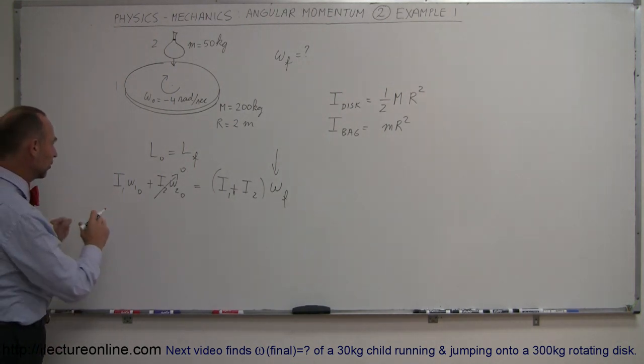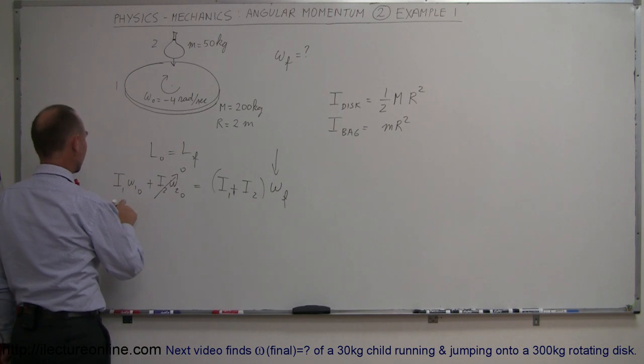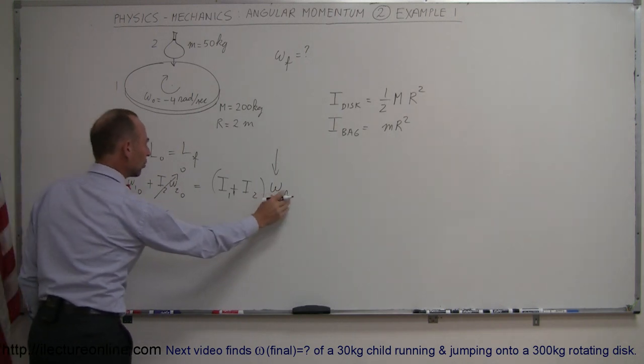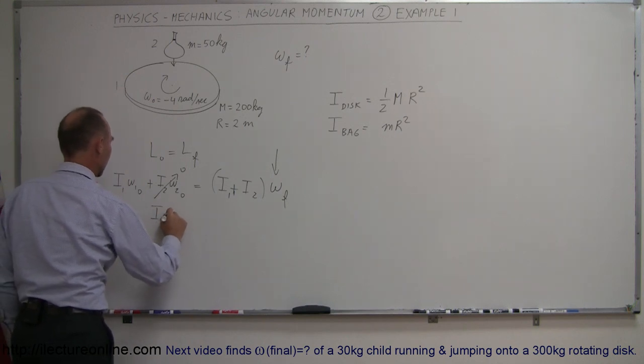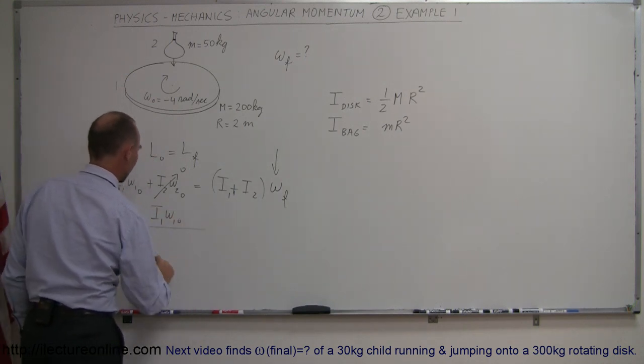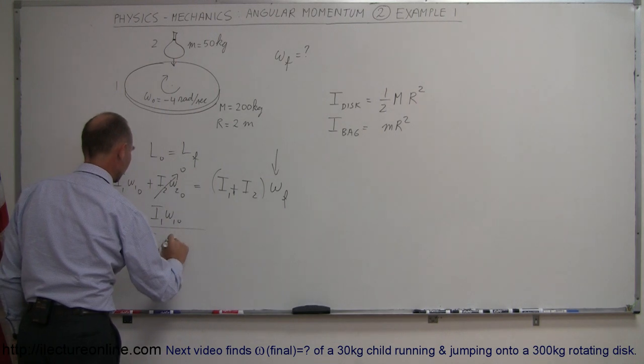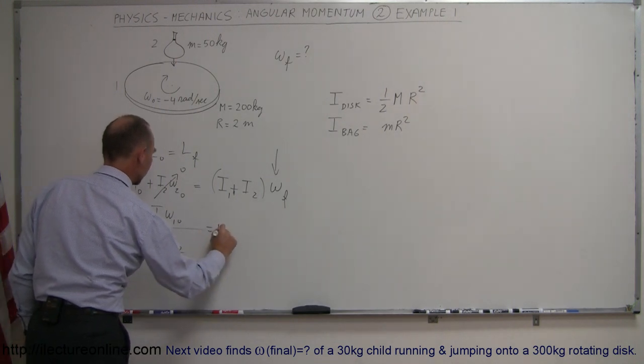All right, so there's the moment of inertia, so let's plug those in now. So we have, well, before we do that, maybe we'll solve for omega final first. So let's bring this down in here. Let's have I₁, omega 1 initial, divided by I₁ plus I₂ equals omega final.